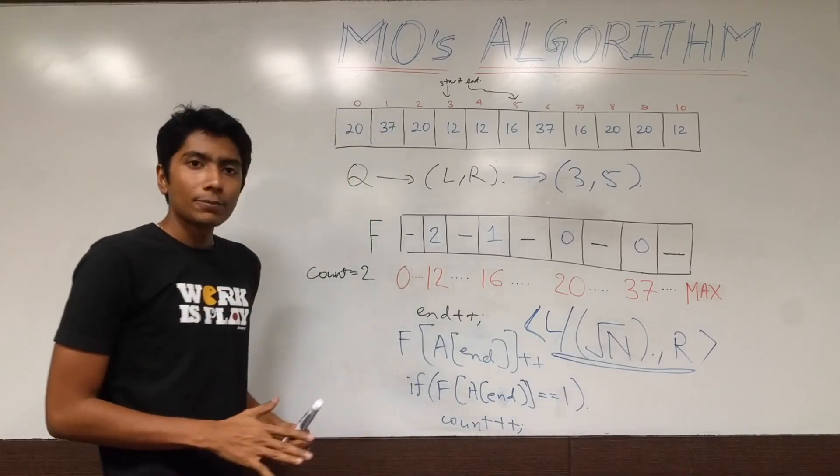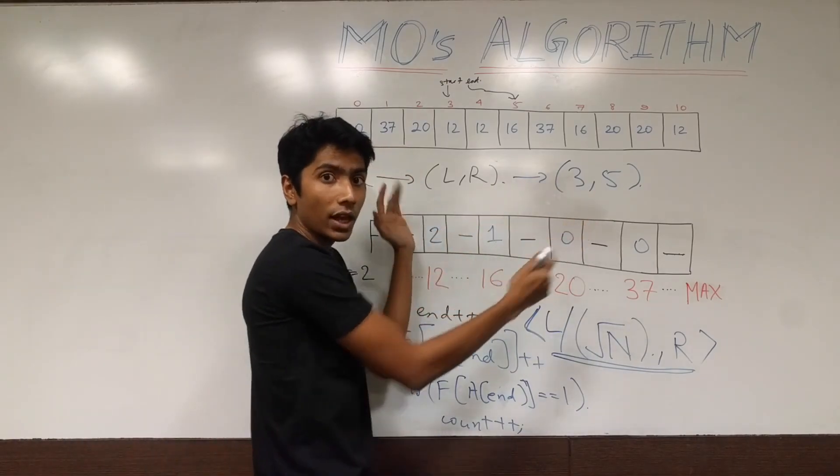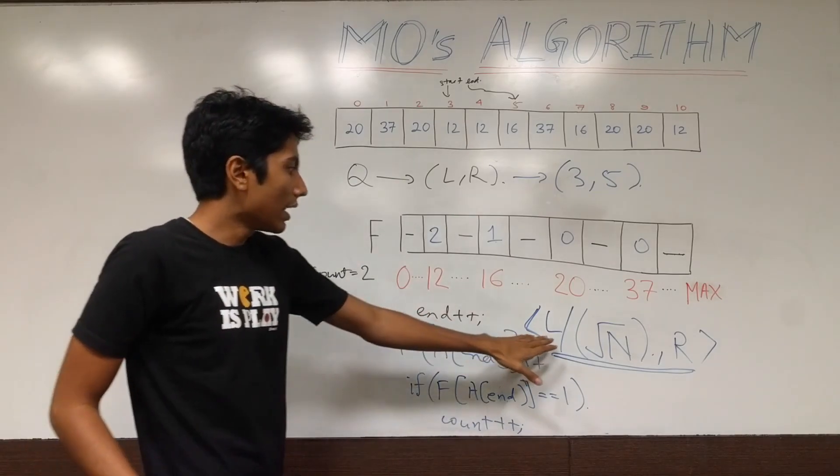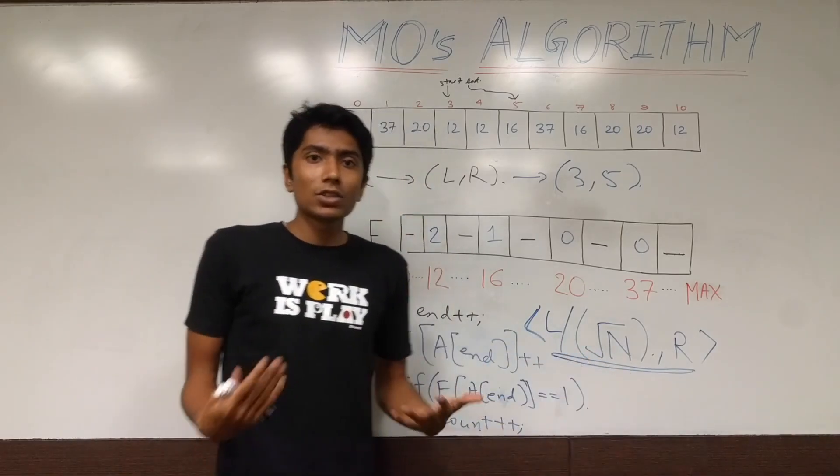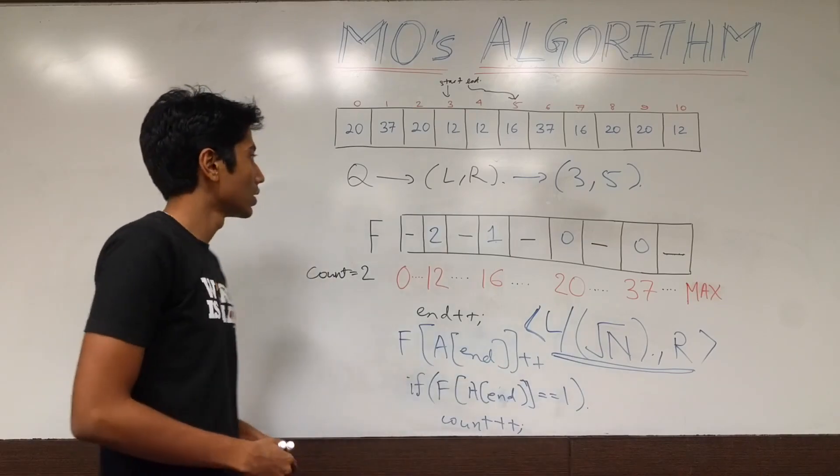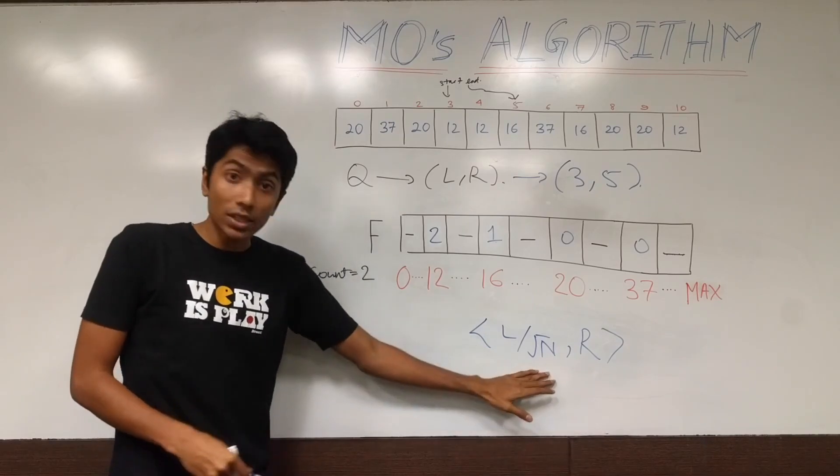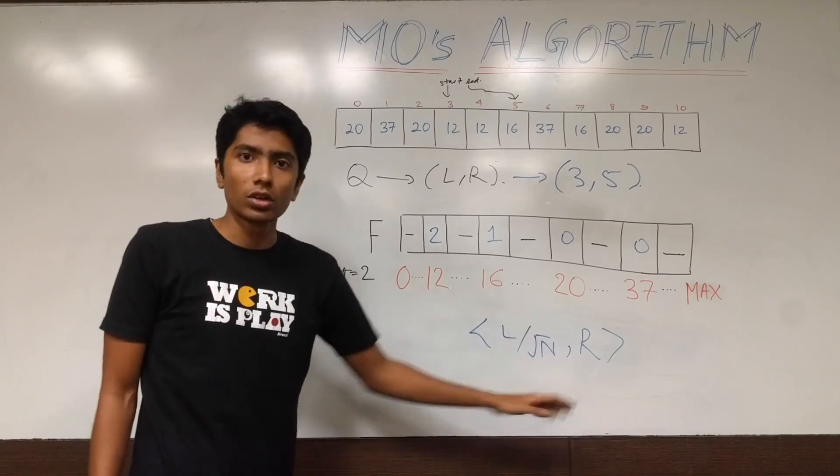By doing this, what we are ensuring is that the amount of pointers which are moving are minimized. So, our left index, we will look at it later. Let's look at how our right index is going to behave if we do this. So, you sorted every query by left block index. And, if there was a tie, then you use the right index in ascending order to sort the queries.